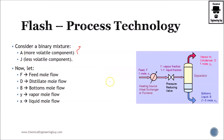Let's look at the following diagram. We have the feed F, the distillate D which is pure vapor, and the liquid B for bottoms. We're going to have Y as the vapor mole fraction and X as the liquid mole fraction depending on what we're talking about. For instance, X_F will be the molar fraction of the feed.